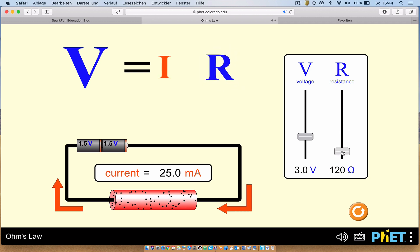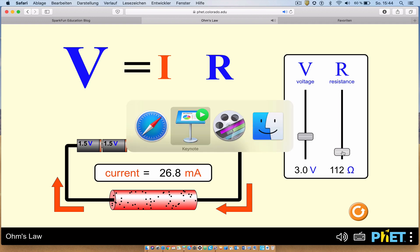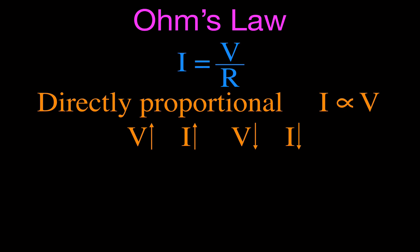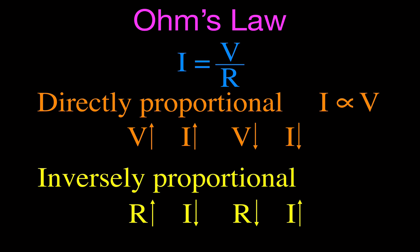That means that the resistance and the current are inversely proportional. The current decreases when the resistance increases, and if we decrease the resistance, the current goes up. The current is inversely proportional to the resistance. So that's an important understanding of the relationship for Ohm's Law: as we increase the voltage, the current increases; as we increase the resistance, the current decreases.